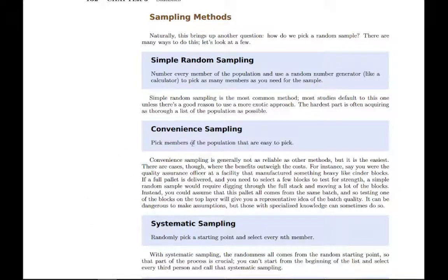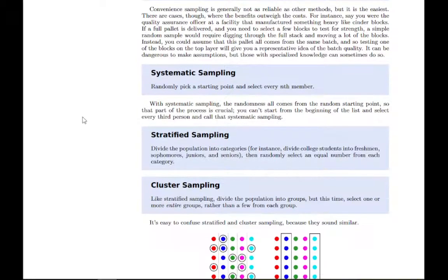There are a few more. Convenience sampling is where you just pick things that are easy to pick. You can read the description there. Systematic sampling is where you go through in order and pick, say, every third or every tenth object in the population.